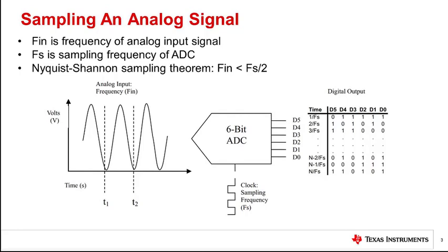Shown in the block diagram is an analog signal with frequency f in applied to the input of the ADC and converted to digital data at the sampling frequency fs. Sampling frequency of an ADC is how often a sample from analog signal is captured and converted into digital data by the ADC.